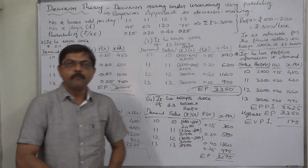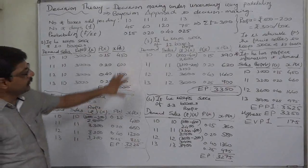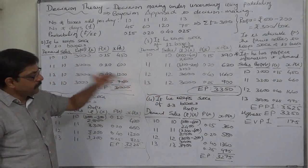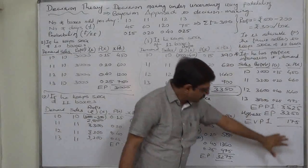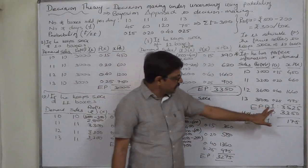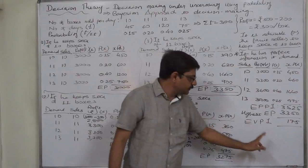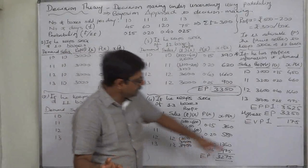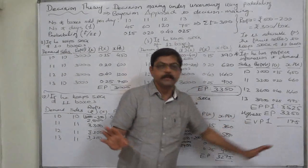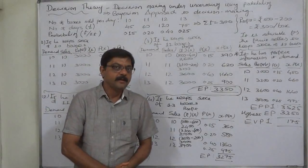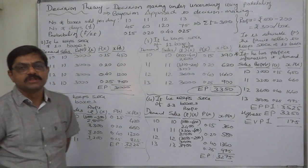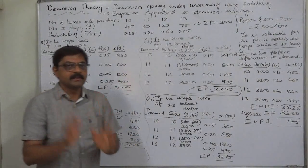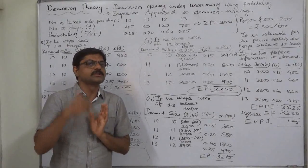This is the end of part 2. In part 1 we calculated the highest possible expected profit without perfect information. In part 2 we found the expected profit under perfect information as well as the expected value of perfect information — the highest possible cost the decision maker should be prepared to incur to get perfect information. In part 3, a different approach to solving this kind of problem will be introduced.